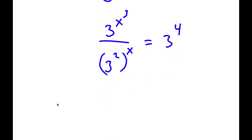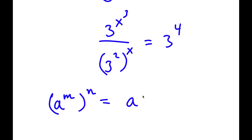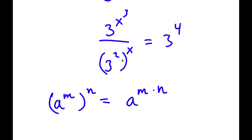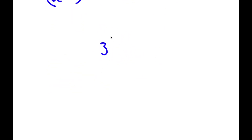Now, if I have something in the form a to the power of m to the power of n, this is equal to a to the power of m times n. So 3 to the power of 2 to the power of x equals 3 to the power of 2 times x, which is 3 to the power of 2x.